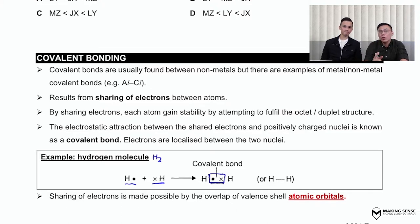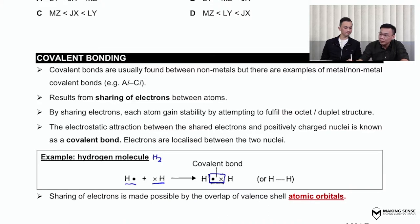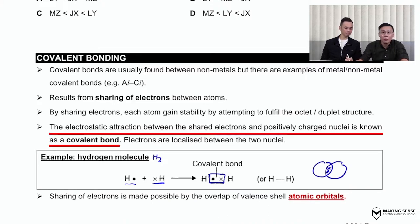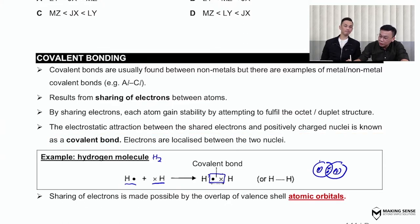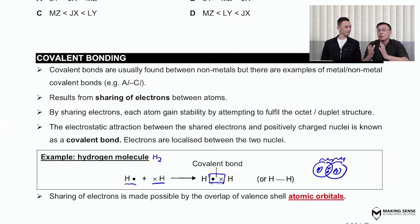A bond is always an electrostatic attraction between a region that is positively charged and a region that is negatively charged. So a covalent bond is better defined as the electrostatic attraction between the shared pairs of electrons and the two positively charged nuclei in the middle of the atom. There's going to be some attraction here, and the attractions altogether are collectively referred to as the covalent bond.